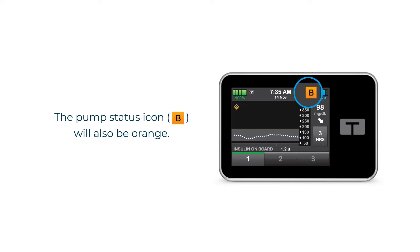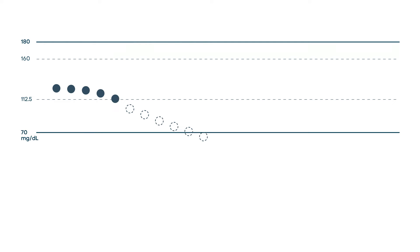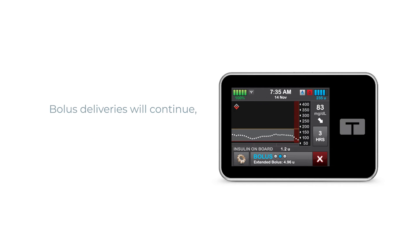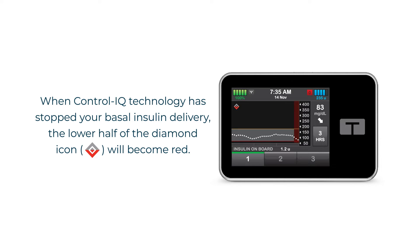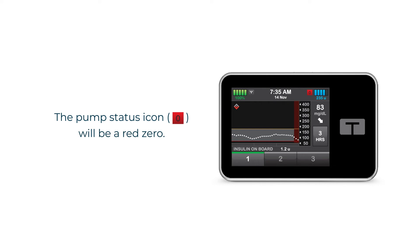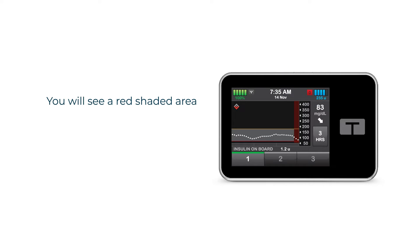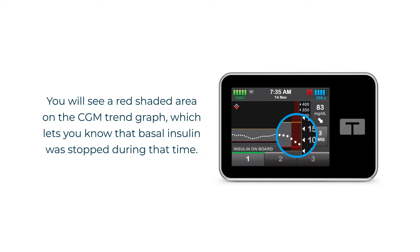When Control IQ technology predicts that your glucose will be below 70 milligrams per deciliter 30 minutes in the future, basal insulin delivery will be stopped. Bolus deliveries will continue, including an active extended bolus currently underway, and you can also start a new bolus even though basal delivery has been stopped. The lower half of the diamond will become red and the pump status icon will be a red zero. Additionally, you will see a red shaded area on the CGM trend graph which lets you know that basal insulin was stopped during that time.